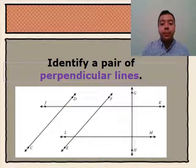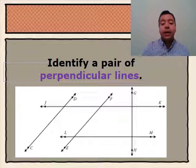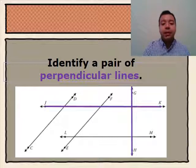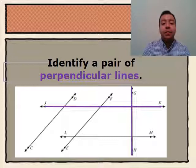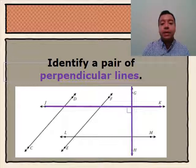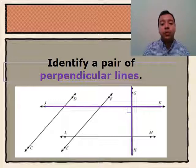Next we'll be looking at perpendicular lines. In the diagram below, we can see perpendicular lines: line JK and line GH. We know that they're perpendicular because there are two lines that intersect and they also create a right angle. We know that this is a right angle because it is 90 degrees and it creates a square corner at its vertex.